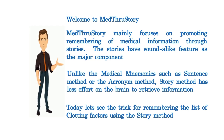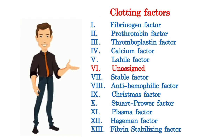Today let's see the trick for remembering the list of clotting factors using the story method. The coagulation or clotting factors are numbered in the order of their discovery. There are 13 numerals but only 12 factors. This is the list of clotting factors.